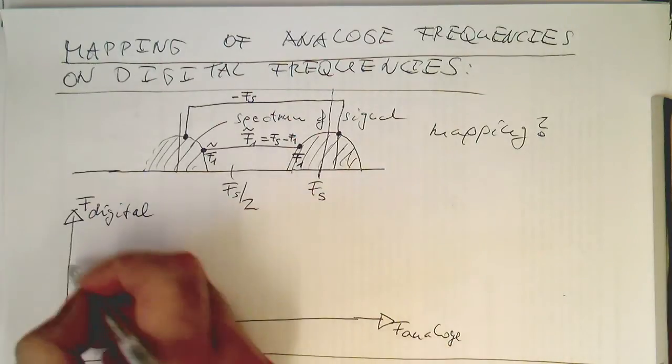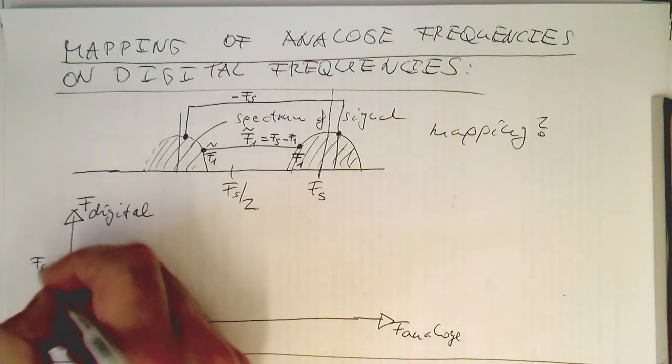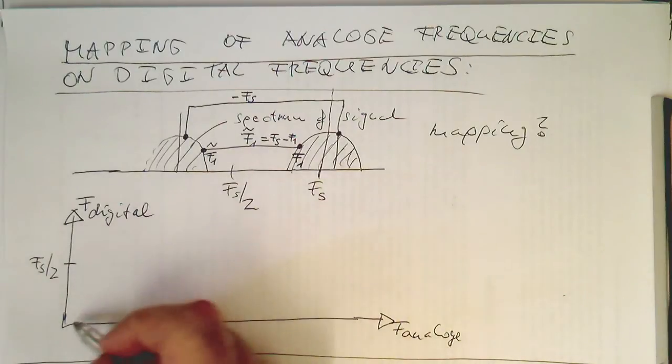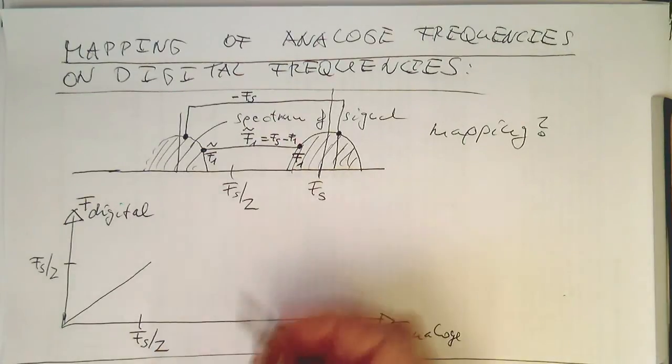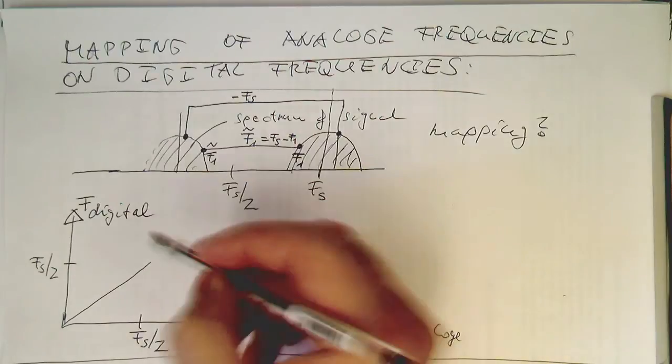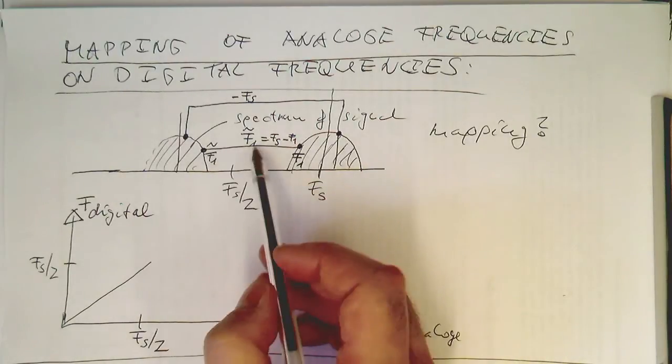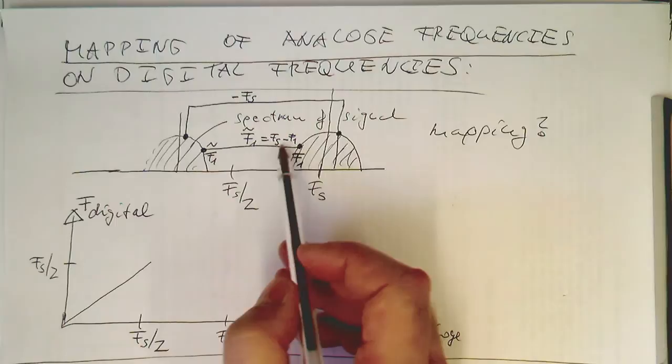And we are putting also our Fs/2 here. Then we know there's a perfect mapping between these frequencies here. But now we've got the Fs here, and now we know that in this period here, this goes reverse.